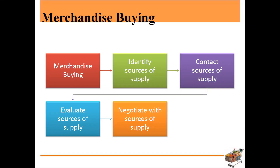Big Bazaar's pricing is somewhat higher because their negotiation with sources is not as strong, which is why they cannot provide products at a particular reasonable price. Some products are at reasonable price and some at highest value — it depends. In merchandise buying, we follow a process: first identify the sources, then contact the sources, evaluate which source gives good products and good pricing, and then negotiate with them so we can work with them over a longer period of time.